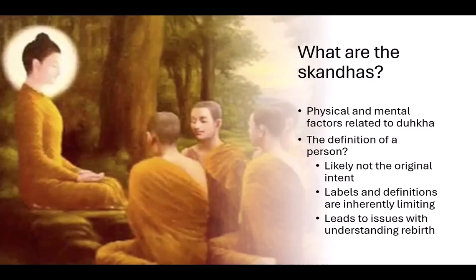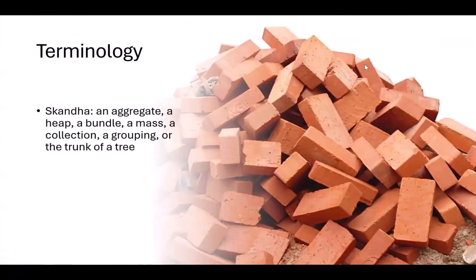The first thing we need to do is look at the terminology. The term skanda itself actually means a lot of different things. One is an aggregate, which is the one I tend to use because that's the way I first learned them. Another is a heap — so you hear people talking about the five heaps. It can also be a bundle, a mass of something, a collection, a grouping, or interestingly enough, the trunk of a tree.